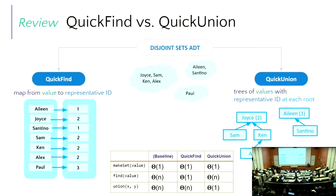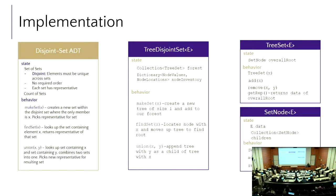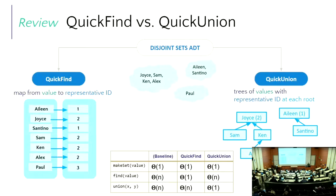Disjoint sets have exactly three functions you need to implement: make set, which makes a set of a single item; find set, which looks up a set given an element and returns the representative — like 'what's the representative for the set that contains two? It's six'; and union, which takes something from one set and something from another set and mashes those sets together.